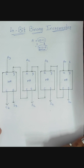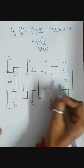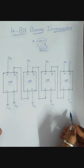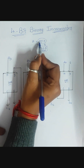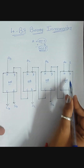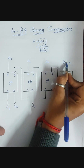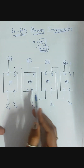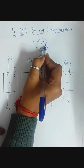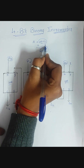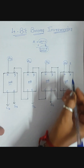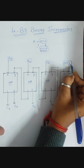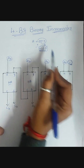To do such an increment, we need a circuit that is independent of any other register. We are going to use half adders for this. As you know, in a half adder you have two inputs and two outputs — one is the sum and the other is the carry. In the half adder, the inputs are A0, A1, A2, and A3. At the least significant bit, the second input must be one — this is compulsory for the increment.